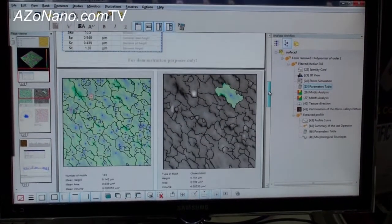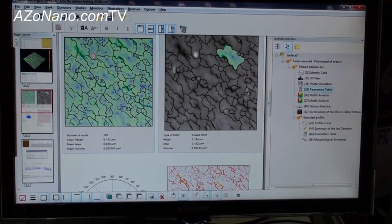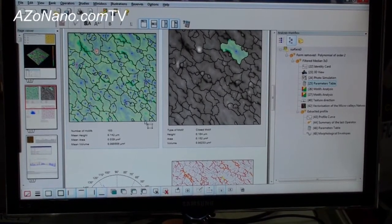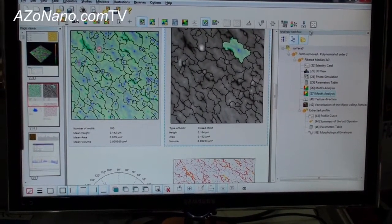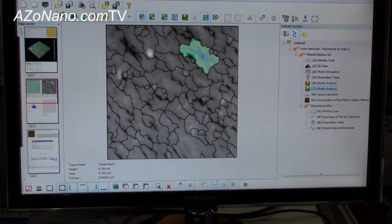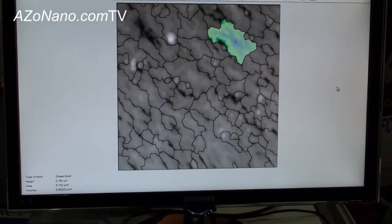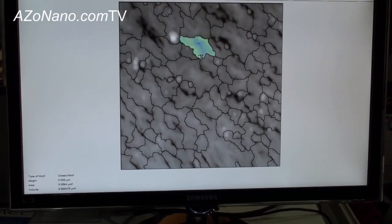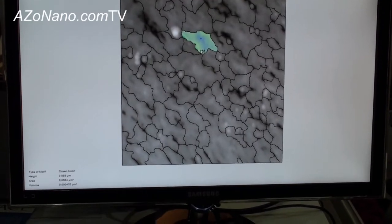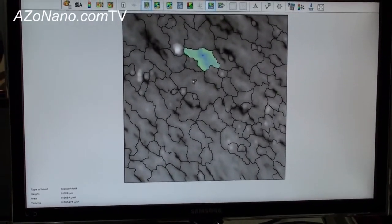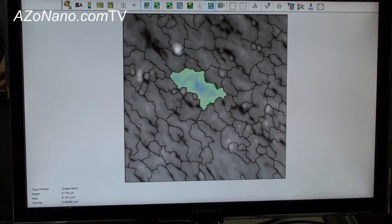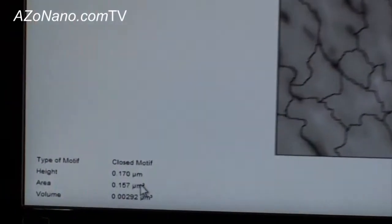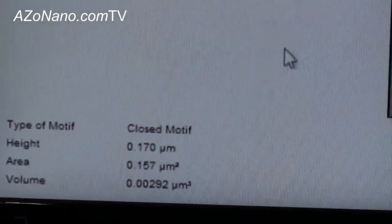So in this document, you have some advanced analysis from the last ISO parameters. For example, here you have the motif analysis, which is a pattern analysis. So anytime you want to know about the specific characteristics of the single motif, you can click on it and get on the bottom left the information about the size, the height and the volume of the motif.